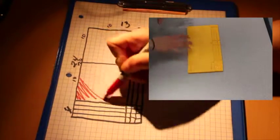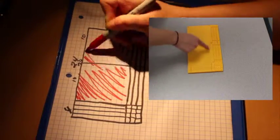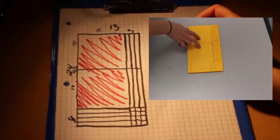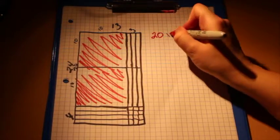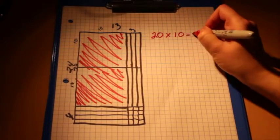And if we look at how many there are, we can say this is 100. This is another 100. So it's 200. As you can see, 20 times 10 equals 200.